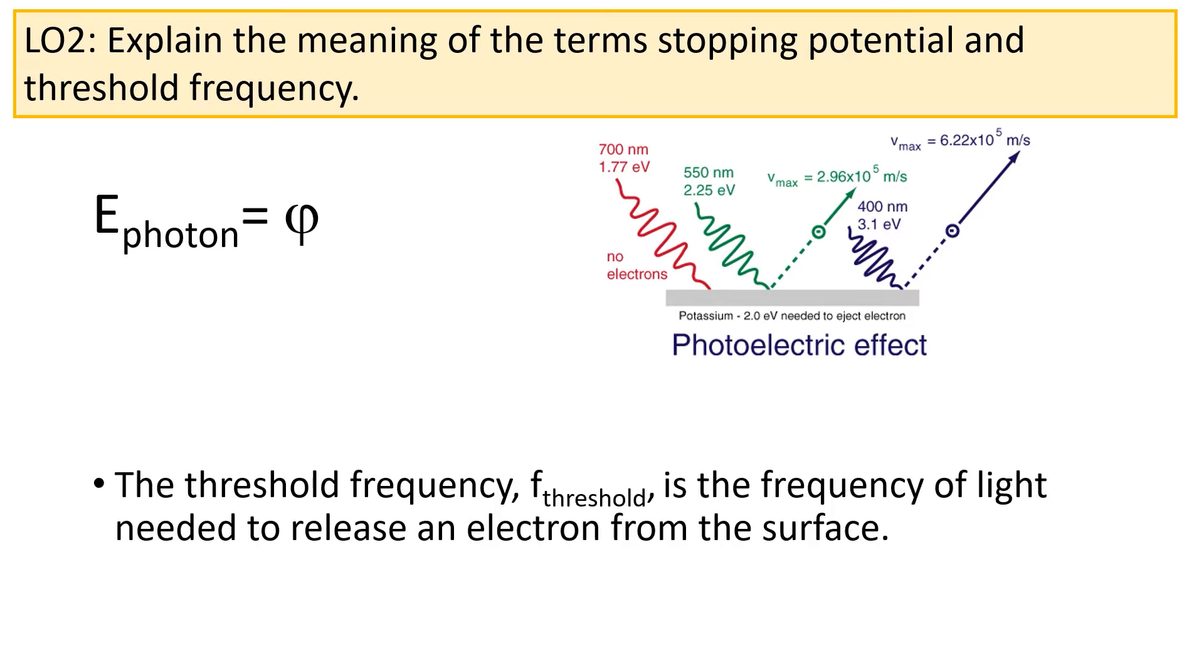However, when a photon has as much energy as the work function, electrons will be emitted from the surface. We call this point the threshold. The threshold frequency is the frequency of light necessary for electrons to be released from the surface. It's equal to the work function φ divided by Planck's constant.